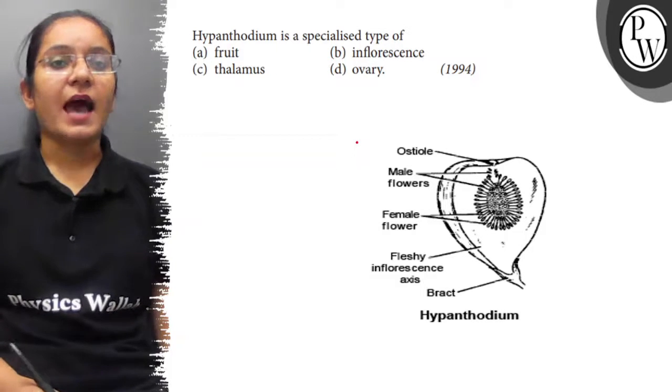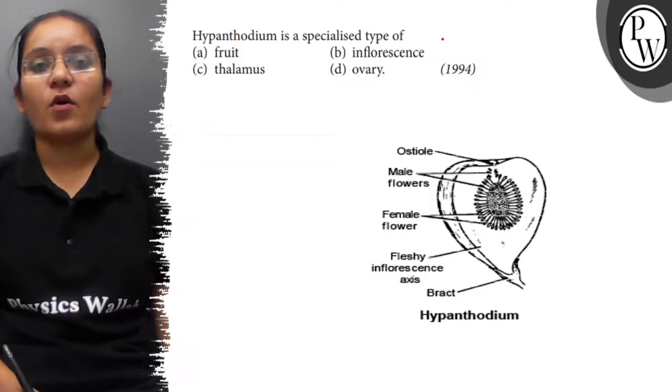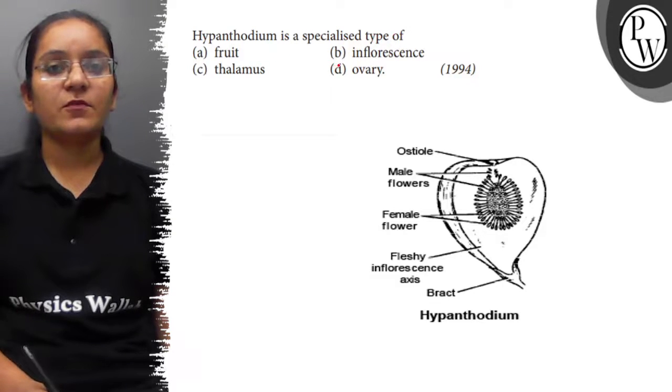Hello students, the question is: hypanthodium is a specialized type of (a) fruit, (b) inflorescence, (c) thalamus, or (d) ovary.